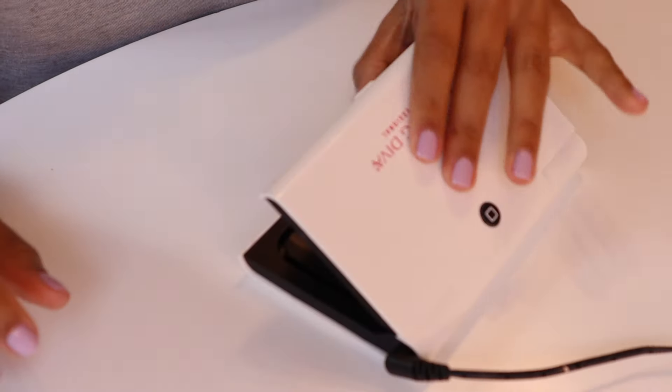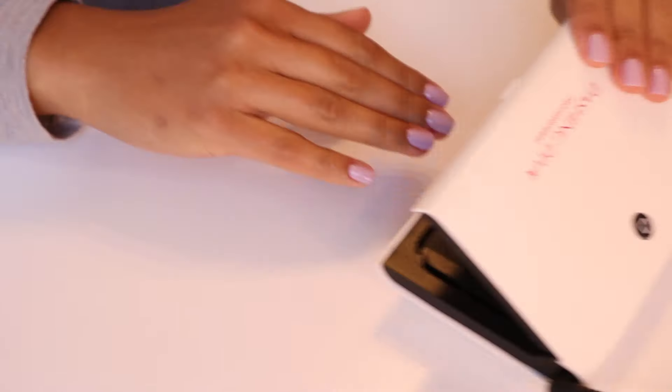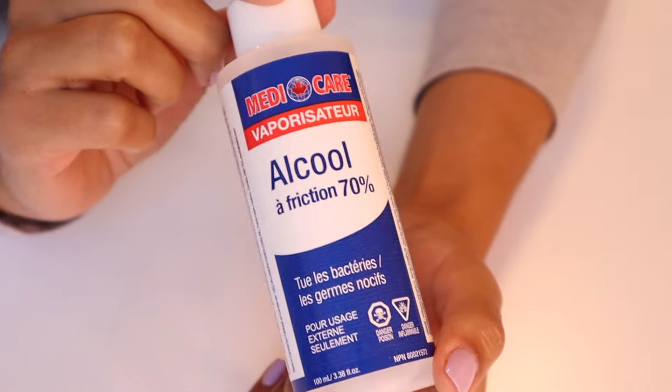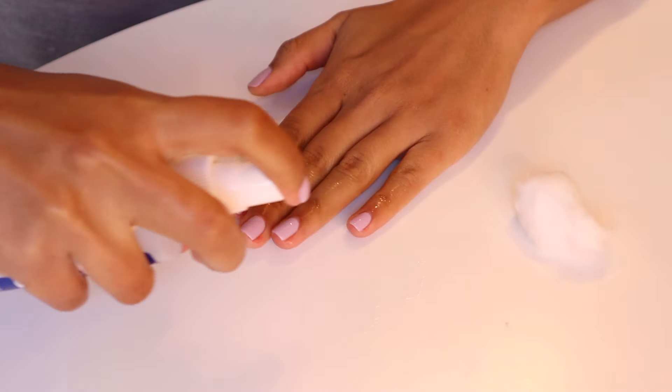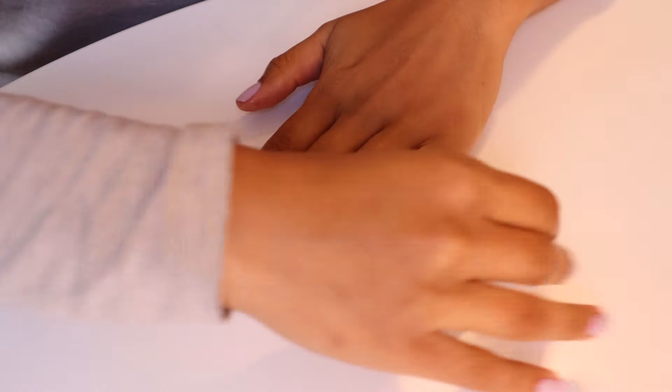After you've applied your top coat, you're going to cure your nails a couple of times. It's just to make sure that everything has cured properly. And the last step is going to be to clean your nails with some alcohol. Gel polish tends to have this sticky layer on top of it after you cure it, so this is just going to clean that off.